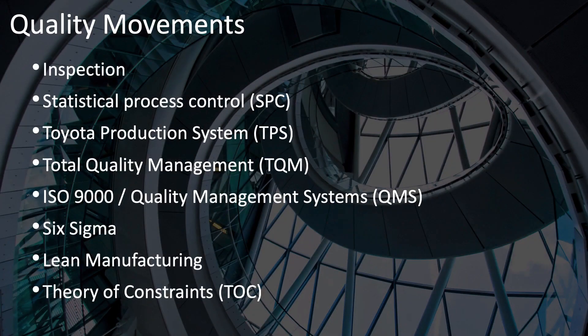This is a list of some of the most influential quality movements in rough chronological order. First, we relied on inspection. Then, with the help of people like Shewhart and Deming, statistical process control was introduced. From this came the Toyota production system and total quality management. The ISO 9000 series then brought together much of the best of these into standards for quality management systems. Then came Six Sigma, lean manufacturing, and the theory of constraints.